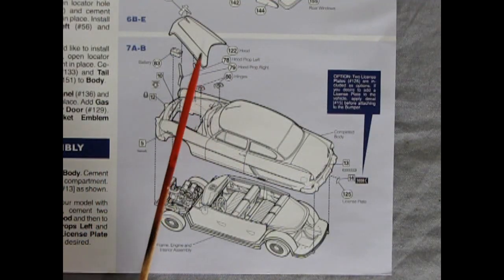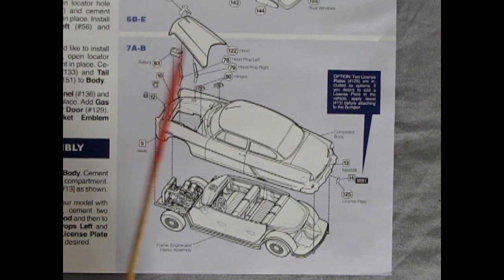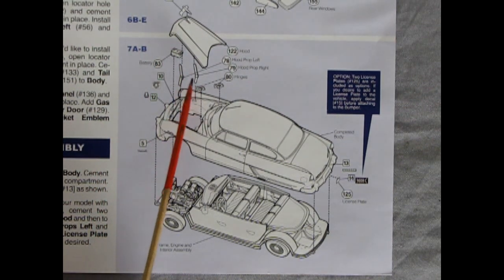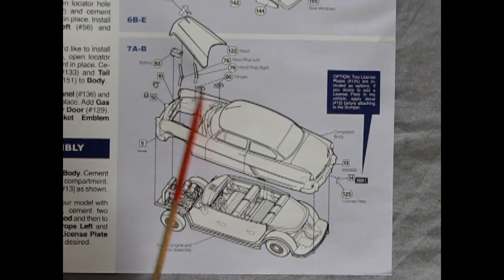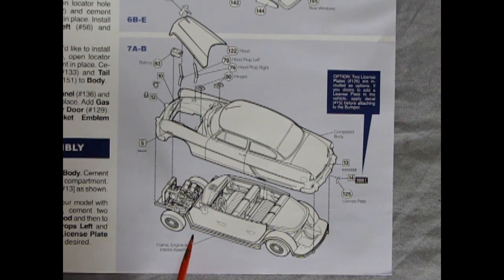Panel seven shows our final assembly with our hood and hood emblem being glued together. We have a battery that drops in. There's our hood hinges as well as a lot of decals which go up in here and then our entire body drops down onto that cool interior and chassis and then we get a license plate for the back.